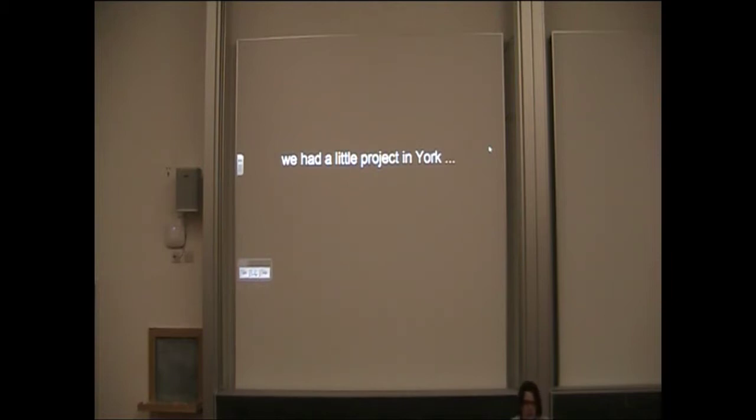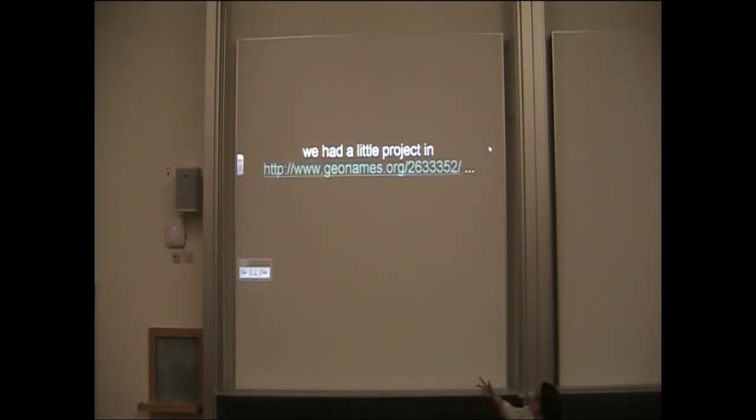So just going back to the original slide I had, we had a little project in York. If you look in GeoNames, there are over 70,000 results for York. So what I really ought to have said was—this is what I should have said—that we have a little project in GeoNames 2633352. And that's one of the points about URIs. If you identify everything with URIs, you're identifying the exact thing. There's no vagueness about whether this name is that person or that person or that person.